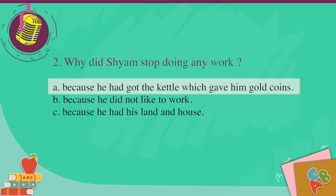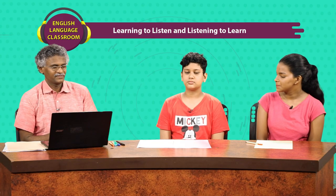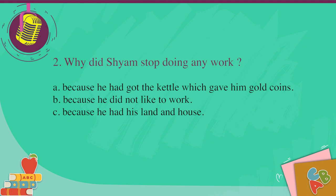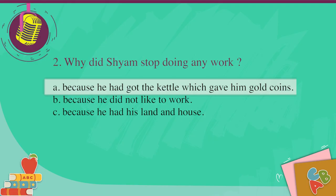Very good. Learners, you also check it out. The second question: why did Shyam stop doing any work? A — because he had got the kettle which gave him gold coins; B — because he did not like to work; C — because he had his land and house. Option A: because he had the kettle which gave him gold coins. He had to stop working because the kettle was giving everything. Learners, check your answers.